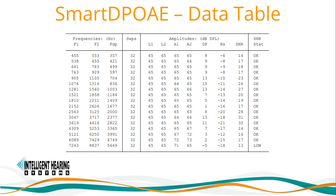A result data table will print out with every DPgram listing the F1-F2 frequency pairs along with the DP frequency, total number of sweeps acquired, desired output intensity levels L1 and L2, and the actual output levels. Results will be shown as average DP amplitude, average noise floor amplitude, the signal-to-noise ratio, and whether the SNR criteria was met. In general, DPoAE results are best when normal hearing is defined between 20 and 30 dB HL. Absent responses are typically found at thresholds greater than 40 dB. DPoAEs can be used to predict magnitudes of hearing loss up to 60 dB HL.